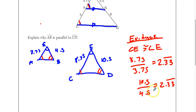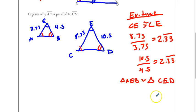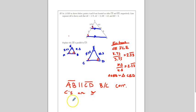We know these two triangles are similar because of side-angle-side similarity. So triangle AEB is similar to triangle CED. Therefore AB is parallel to CD because corresponding angles are congruent. Specifically, angle EAB is congruent to angle ECD. And that explains why these two lines are parallel — you have corresponding angles that are congruent.